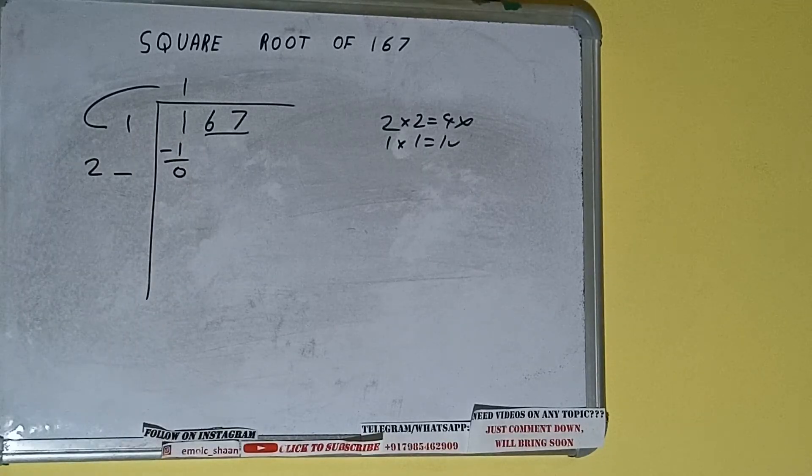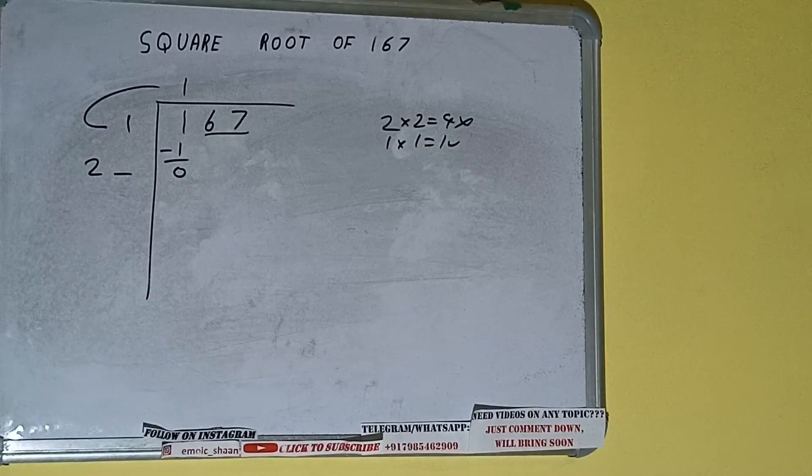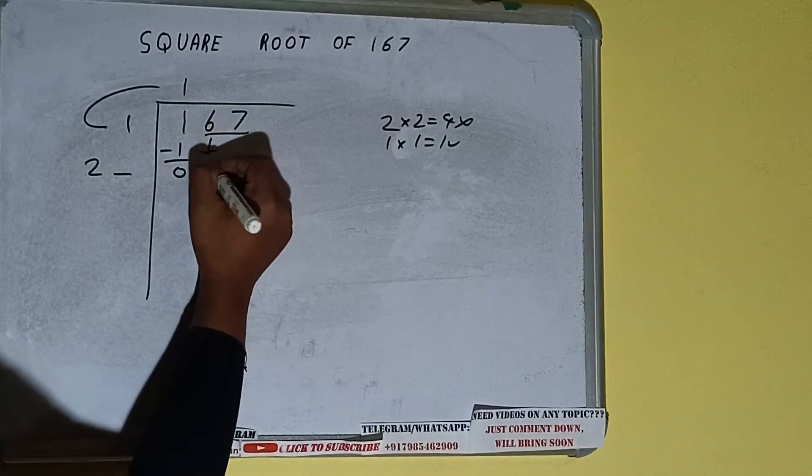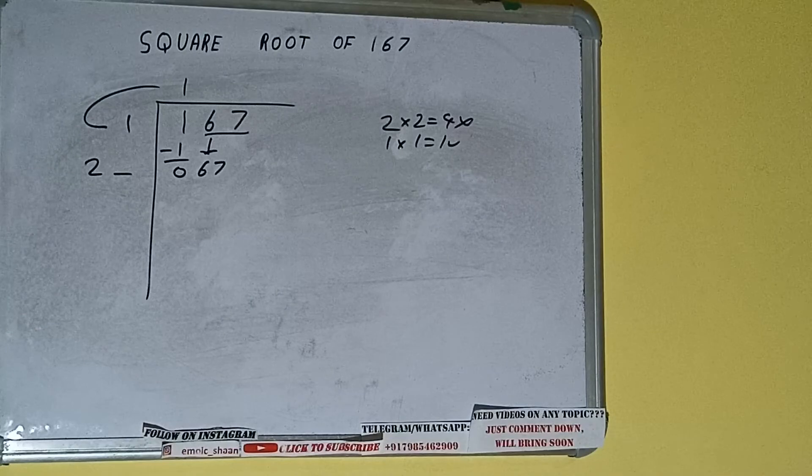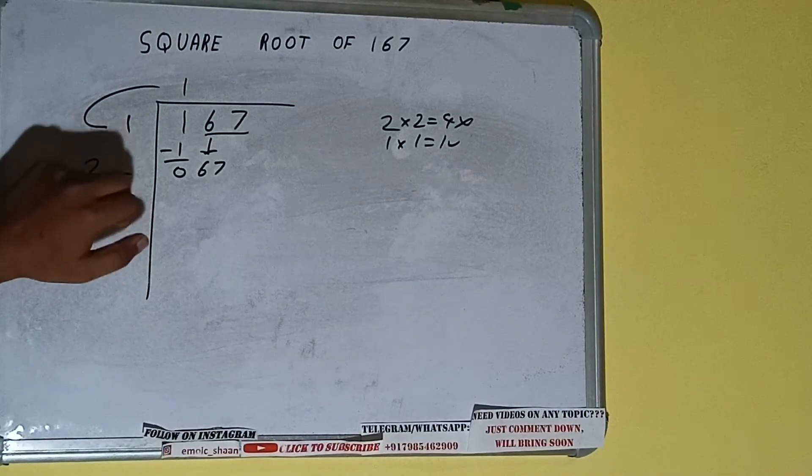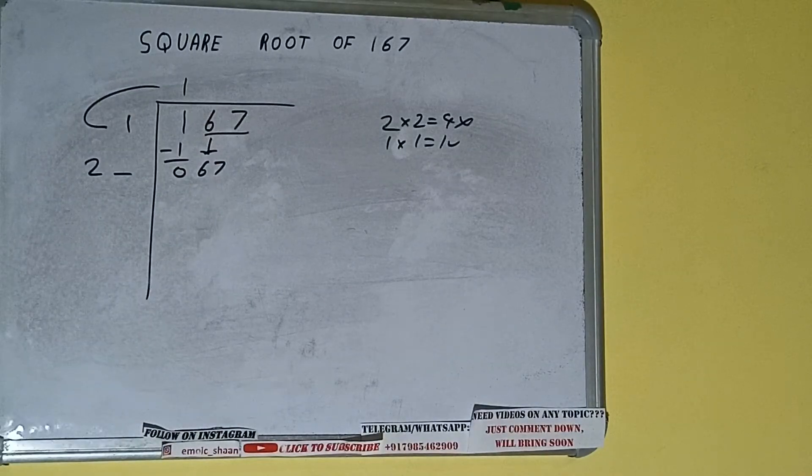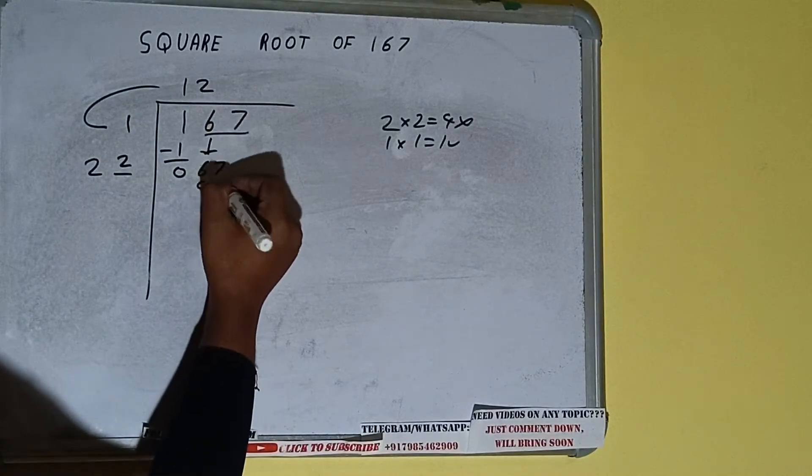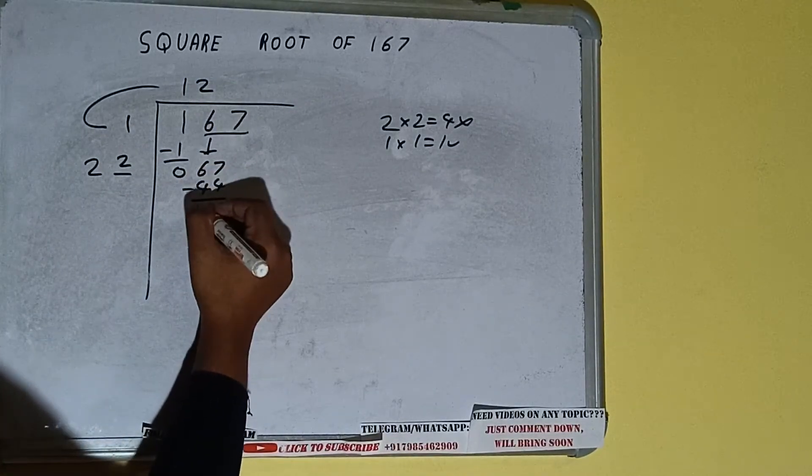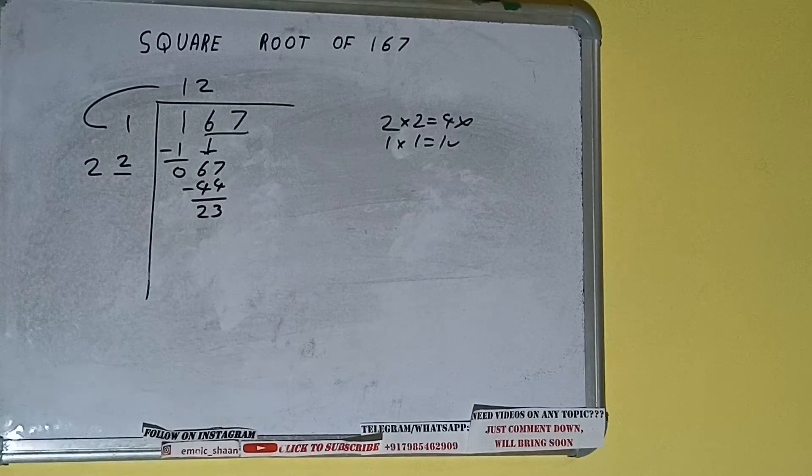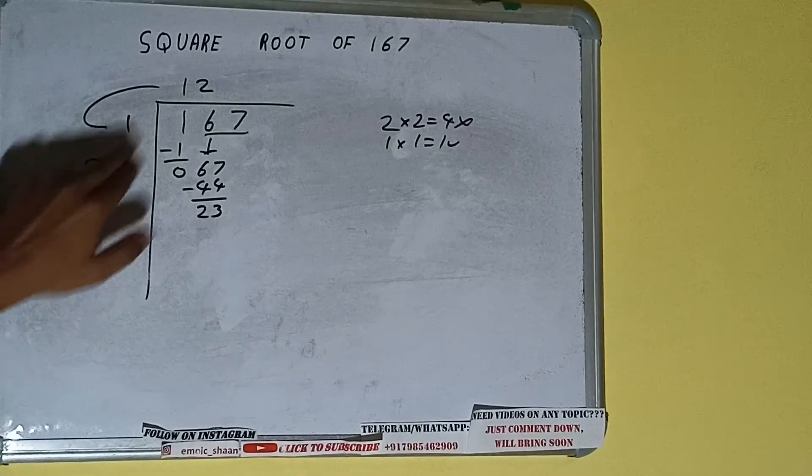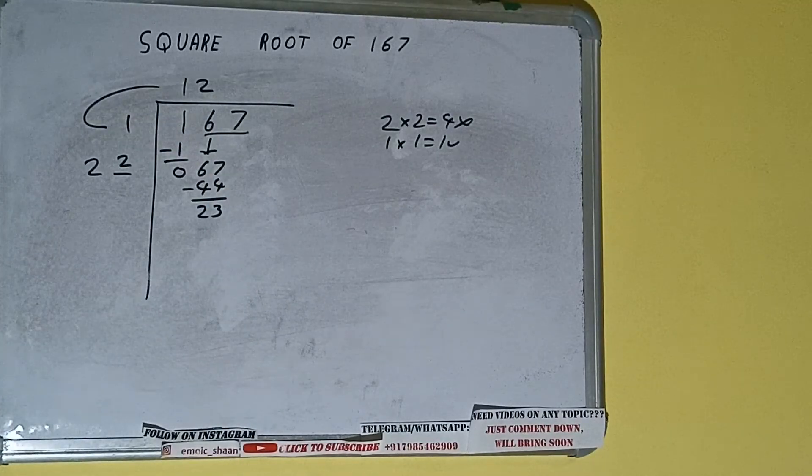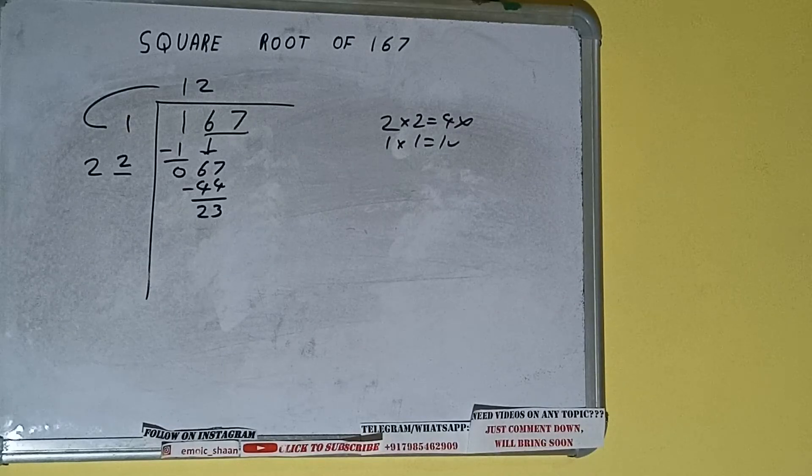Write it here and keep a digit extra. And this number we need to make it big. So bring the next pair down and it will be 67. Now whatever number we write here we have to write here also. So we can take 2 here and 2 here. 44 subtract and 23 will be left. Now 22 into 2 we did so add both. So 22 plus 2 will be 24.